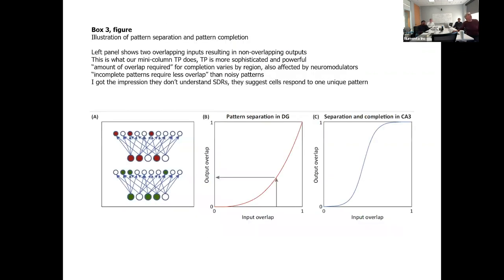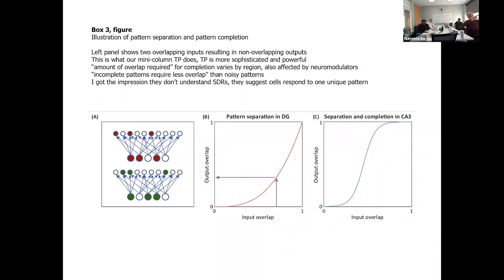Here's another figure illustrating these ideas. On the left they show an input pattern and output pattern, arguing that two input patterns that overlap can result in an output pattern that overlaps less — we do this all the time in our models. The middle panel shows that as input overlap increases — the number of overlapping ones in an SDR goes from zero to one — the pattern separation in DG is not linear. If there's very little overlap, you get completely different output representations. But if you have enough overlap, it'll basically lock on to the first one — pattern completion with overlapping inputs.